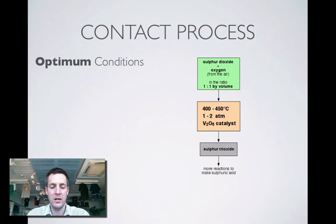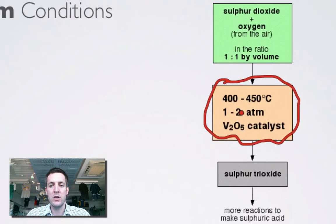Let's have a look at the actual conditions that are chosen in industry. Again, we can see this kind of middling sort of temperature, 400-450°C. We're heating it up in spite of the fact that it's damaging our yield. Why are we doing that? Because we don't want the rate to be too slow. We want the particles to have enough energy to react, so we heat them up and that increases the rate at which equilibrium is reached. As soon as it's reached, we can take our sulfur trioxide out and start using it to make our sulfuric acid.